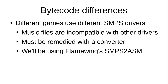You used to be able to use a tool like Music Pointer Fixer or convert a .bin file to another .bin file, but I think that's a bad idea. I think what we should do is the proper way — turn it back to code just like it was in the original Sonic source code. For that we'll be using flamewing's SMPS to ASM.